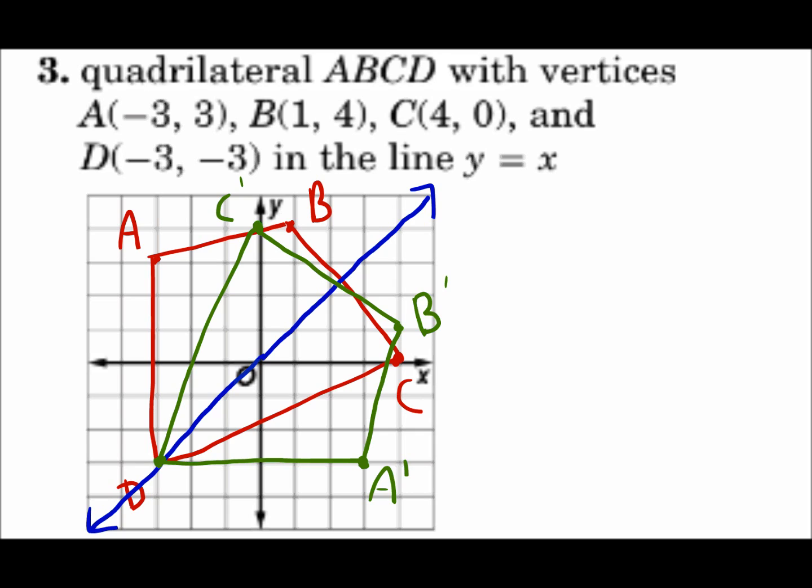Remember, when you reflect a point, A reflects to A prime, B to B prime, and so on. And if we did another transformation, if we reflect it again somewhere, then we would get an A double prime. If we did it again, we'd get an A triple prime, and so on. Since we're only reflecting once, we only have single primes.